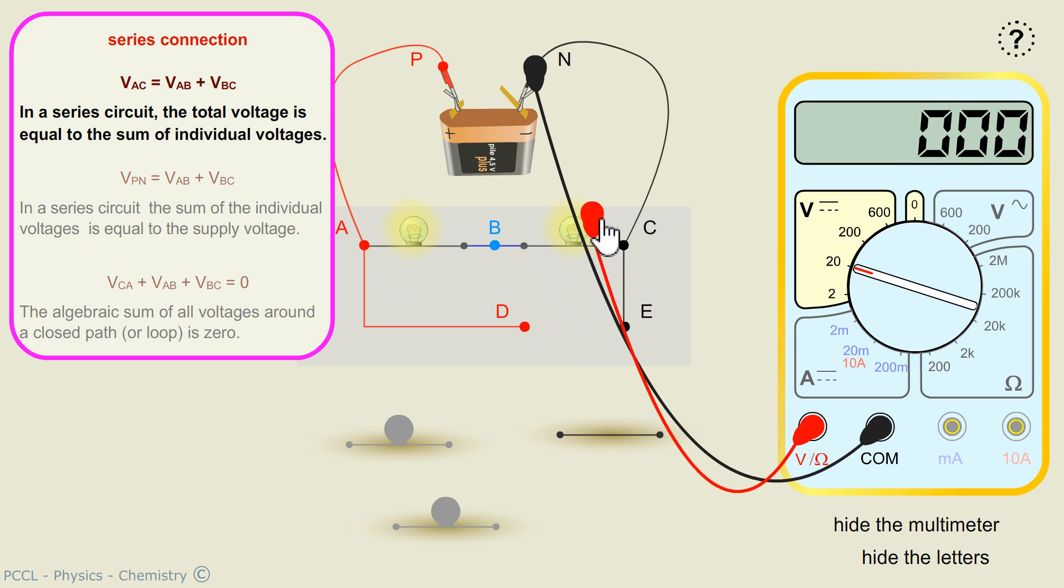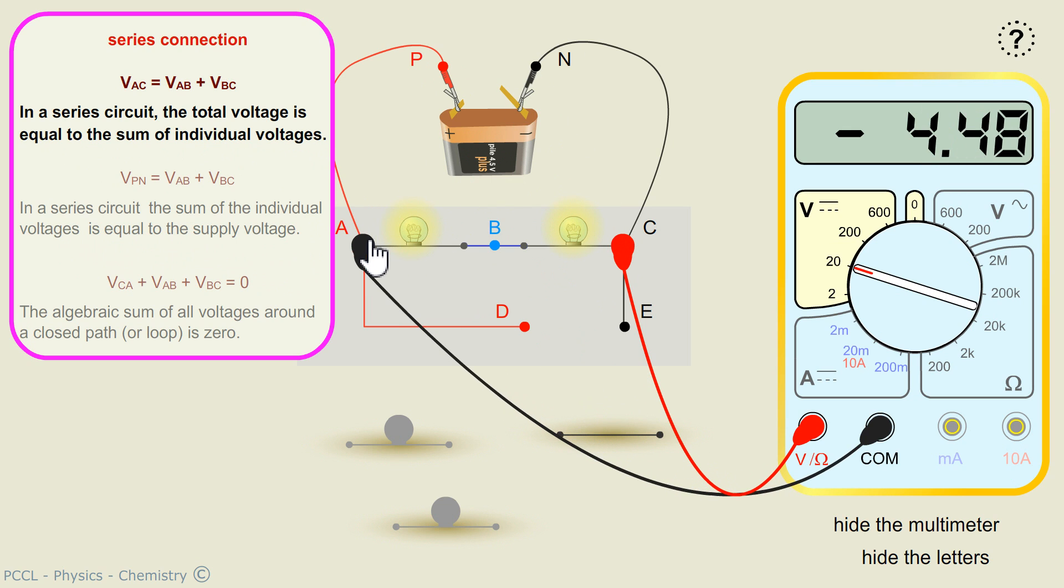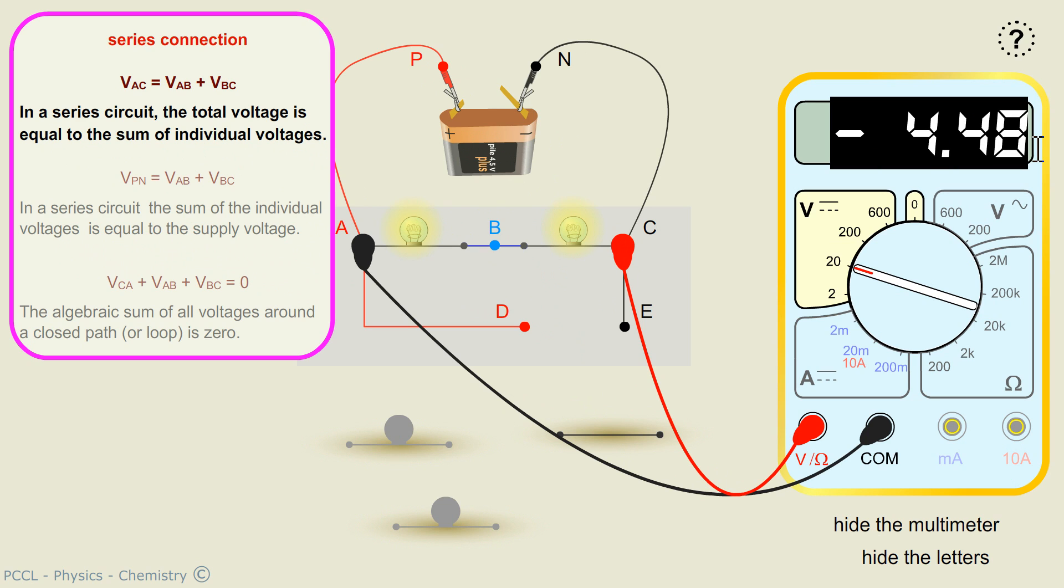Now, look again. Tension is an algebraic value. VAC equals minus VCA, and therefore the algebraic sum of all voltages around a closed path, or loop, is zero. All three conclusions are true.